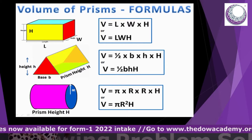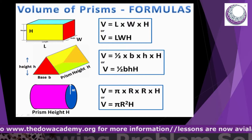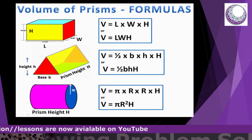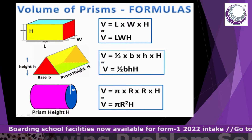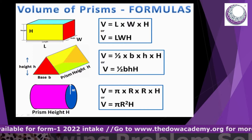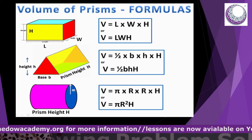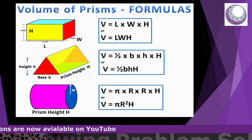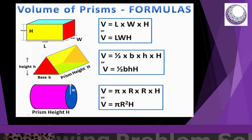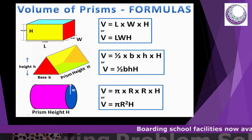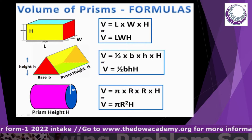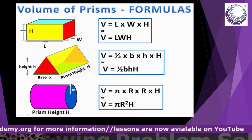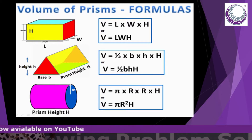Moving on to the triangular-based prism, the red highlighted area becomes our cross-section, so the area of the cross-section is the area of the triangle. We are given the base of this triangle and the perpendicular height. In the formula, the ½bh represents the area of the triangle — our cross-section — and the capital H becomes the length or height of the prism. So the volume is ½bh × H, where the small h is the height of the triangle and capital H is the height of the whole prism.